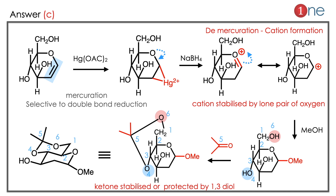Numbers are given for clear understanding so you can follow the atom positions. Key learnings: one, when a cation forms near a lone pair system (here oxygen), the cation always forms adjacent to that lone pair; two, ketones are stabilized (protected) by 1,3-diol groups to form cyclic acetals — this is a standard protecting group strategy in total synthesis.